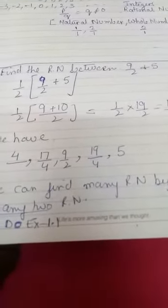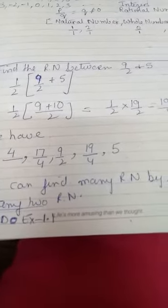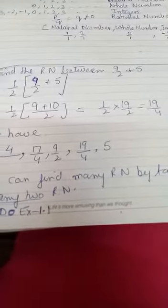Again, we will take the average. 1 by 2, 9 by 4 plus 5. So, it comes out to be 19 by 4.